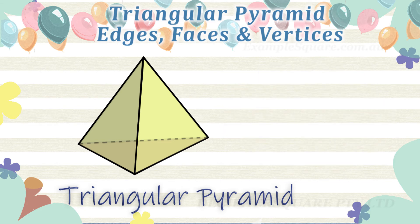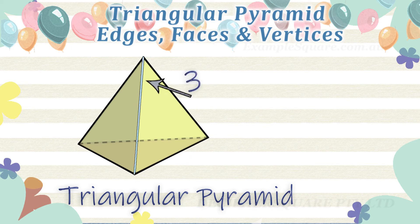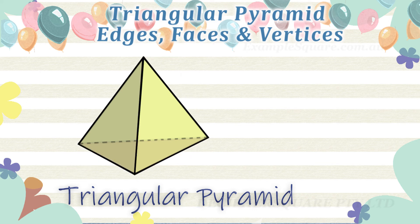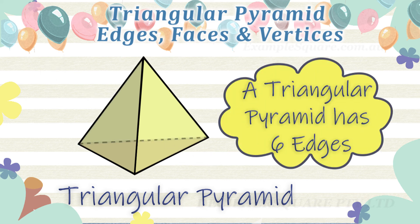How many edges does a triangular pyramid have? A triangular pyramid has six edges.